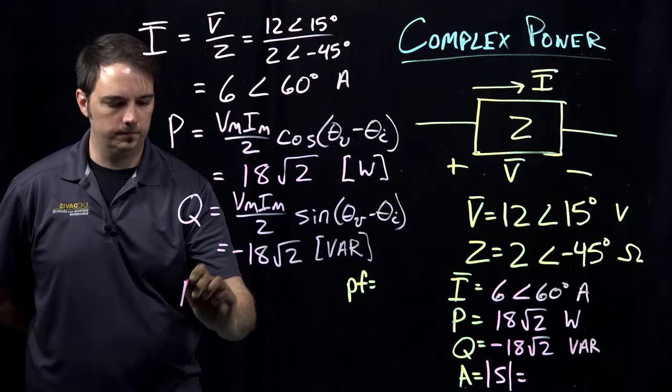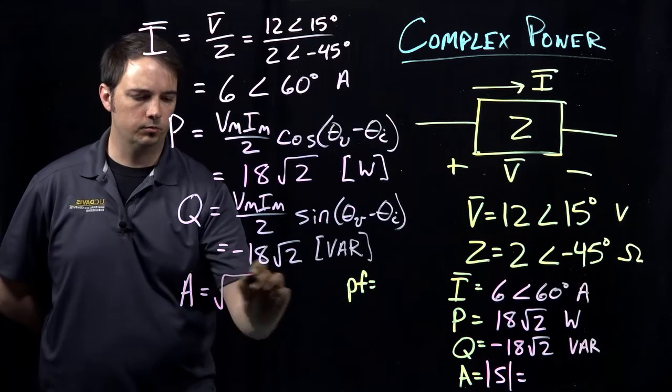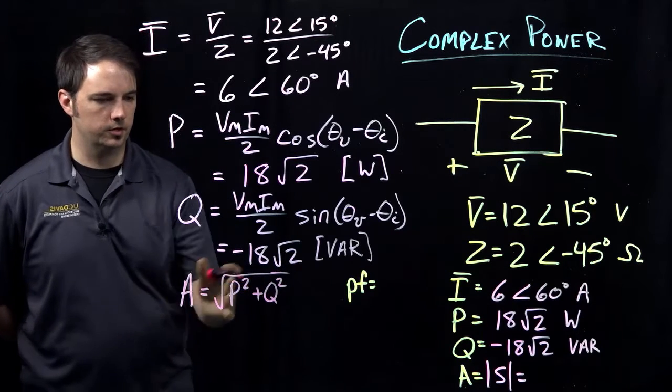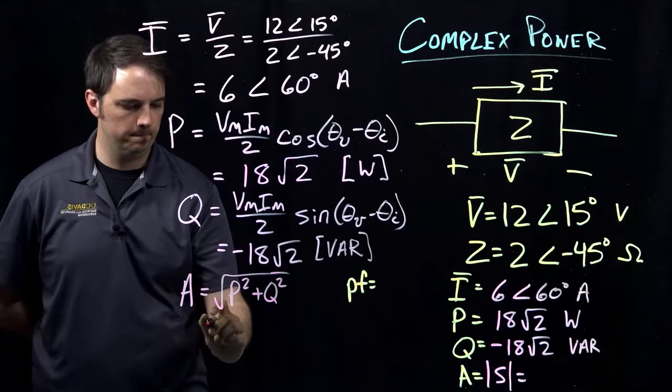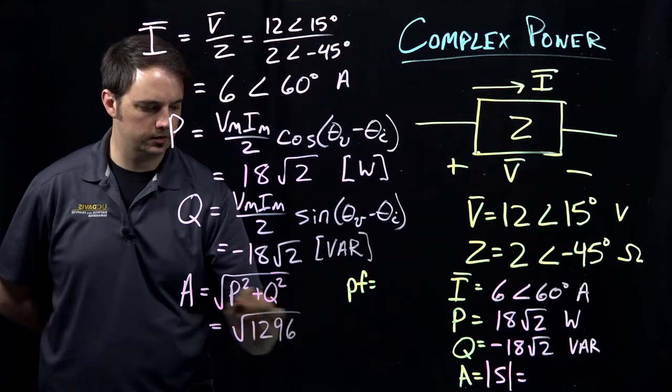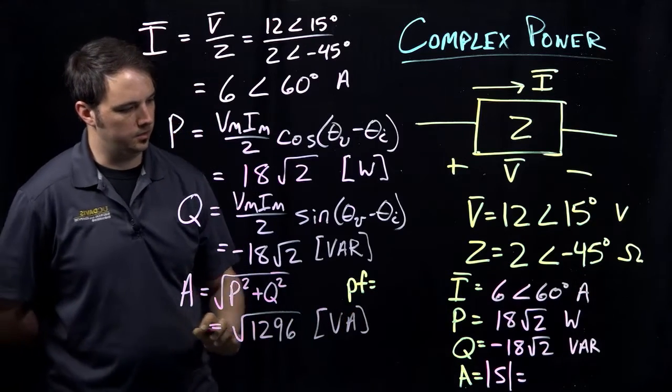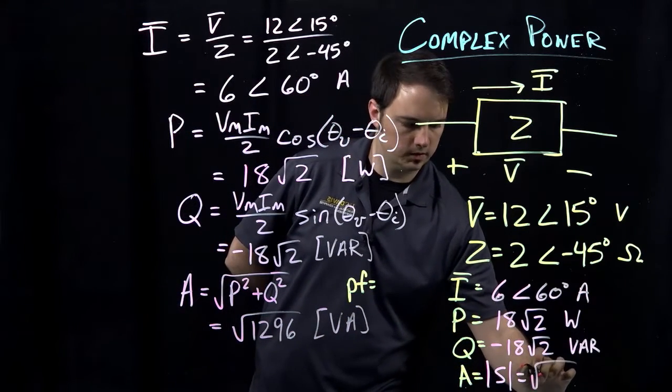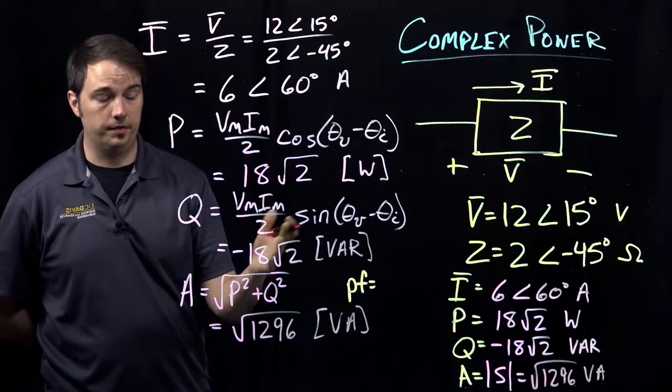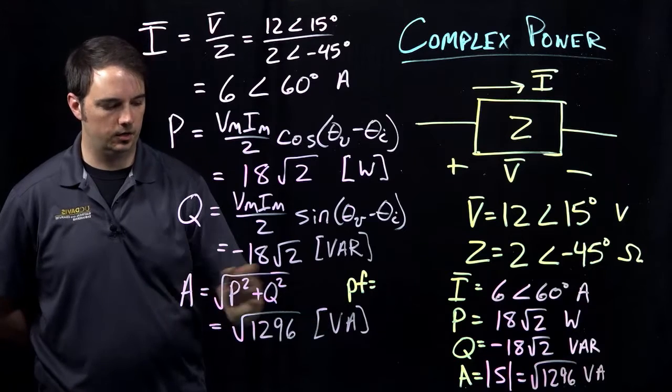So now our apparent power. The apparent power is simply the magnitude of the complex power, which is simply the root of P squared plus Q squared. So again, just applying what I just found for P and Q, plugging in here, I get a quantity of root of 1296. On an exam, I wouldn't worry so much about simplifying that any further to save yourself some time, that would be perfectly acceptable here. And the apparent power and the complex power are both quantities that are given in terms of a different unit, the volt amp, or just indicated here as VA.